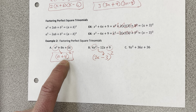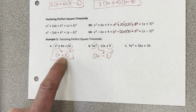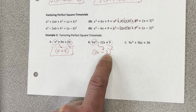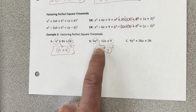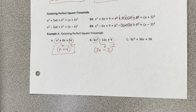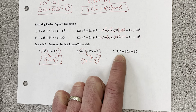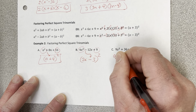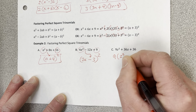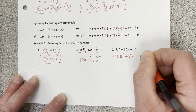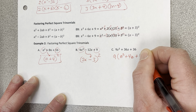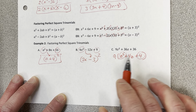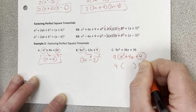For 4x squared minus 12x plus 9: 2x times 2x gets 4x squared, three times three gets nine, and the middle sign is negative. We need to check: 2x times 3 is 6x, doubled is 12x — as a negative that's negative 12x, which matches. So it is in fact a perfect square trinomial, factoring as (2x-3) squared. On the next one it looks like we can take out a GCF of 9 — let's divide to find what's left.